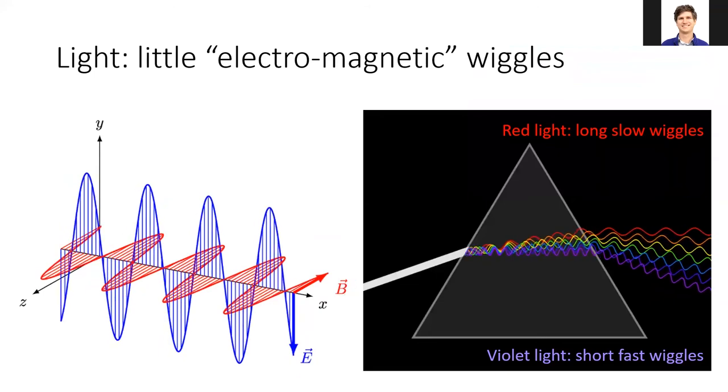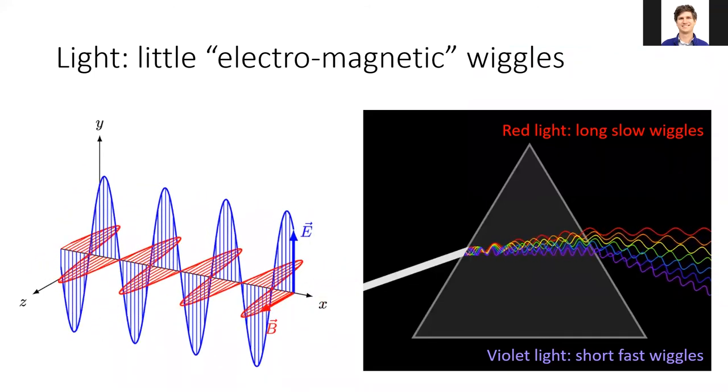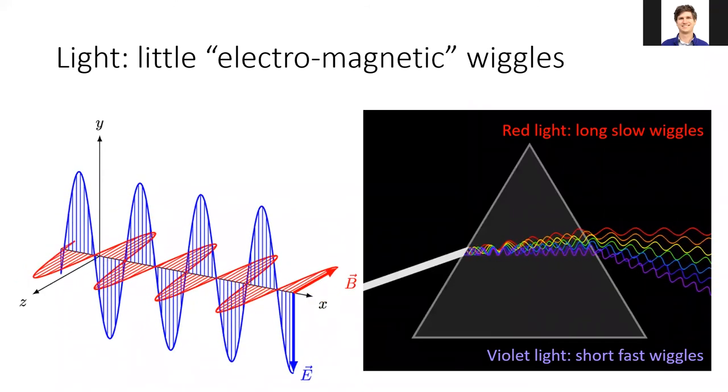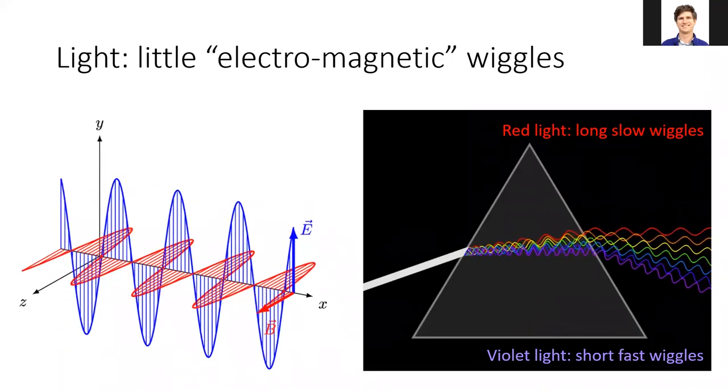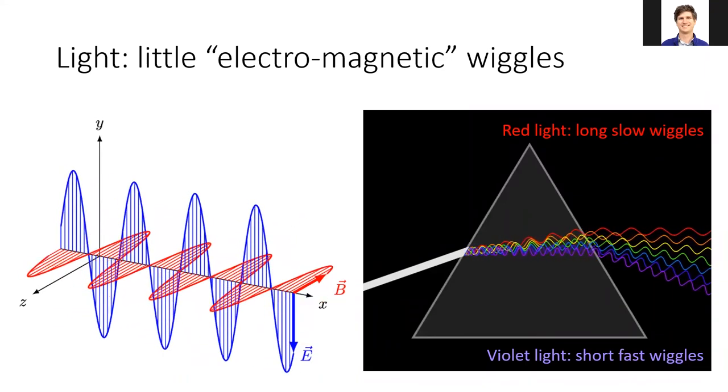To visualize a wave of light, imagine little electromagnetic wiggles like these animations show. Some waves wiggle faster than the other waves. You'll note that the violet light has a lot faster wiggling than the red light on the right image.